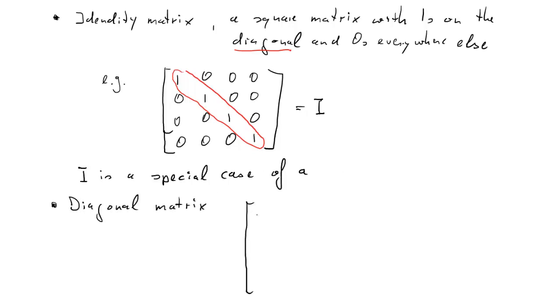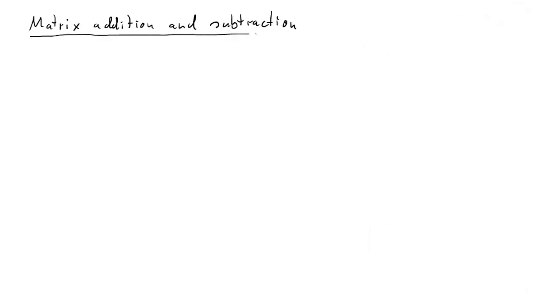This is a special case of a symmetric matrix. It is also a special case of what we call more generically a diagonal matrix. A diagonal matrix is a matrix that only has non-zero values on the diagonal and 0s elsewhere. But they don't all need to be 1s.